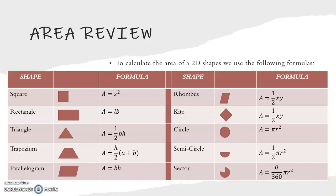For a circle we have the formula A equals pi R squared. For a semicircle we have the formula A equals a half pi R squared, and for a sector we have A equals theta over 360 times pi R squared. Now let's look into each of these formulas and do an example on each of these shapes in the following slides.